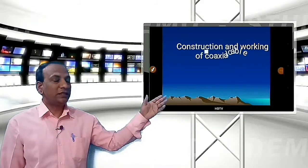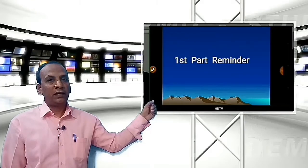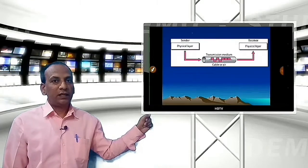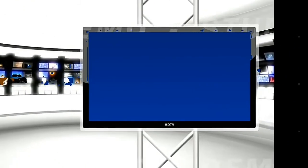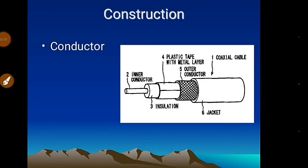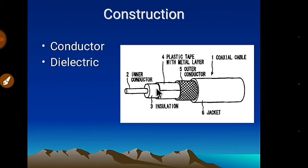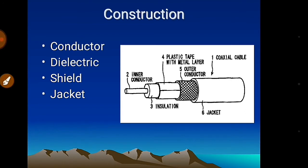Hi friends, in the last video we had seen the introduction of coaxial cable transmission line and behavior of electromagnetic field in a conductor with high frequency. Today we will see the construction of coaxial cable. This picture shows the construction: conductor, insulation (also called dielectric), APL, braiding (together called shield), and jacket. Now we will see each one by one.